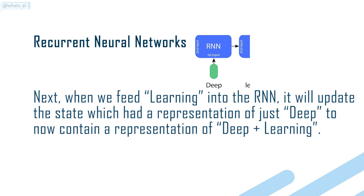Next, when we feed "learning" into the RNN, it will update the state which had a representation of just "deep" to now contain a representation of "deep" plus "learning".